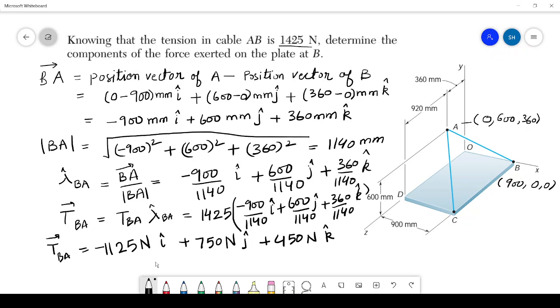Okay, so now you can find out the components. So T_BA in the x direction will be equal to minus 1125 Newton, and T_BA_y will be equal to 750 Newton.